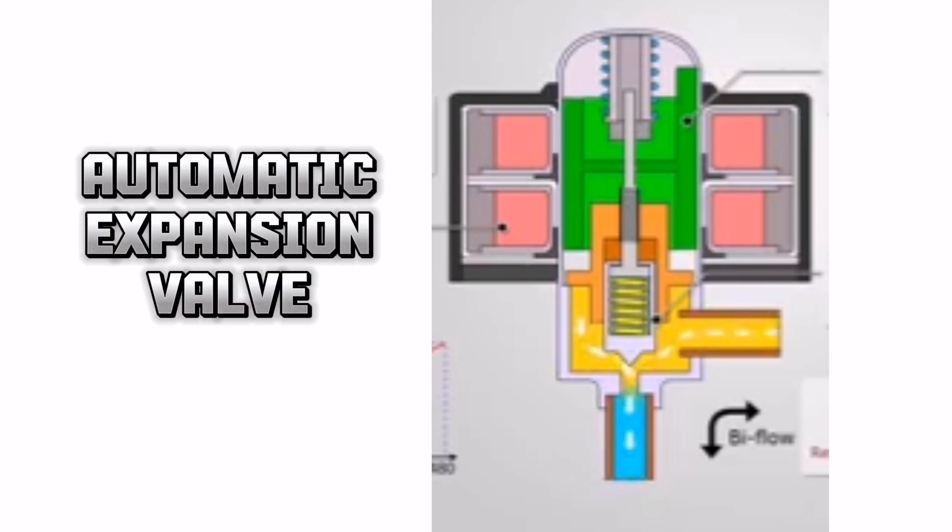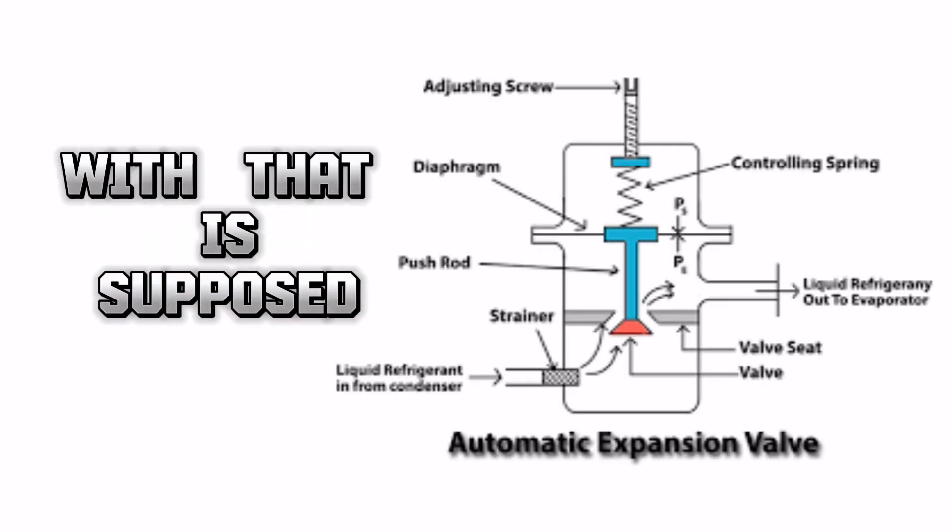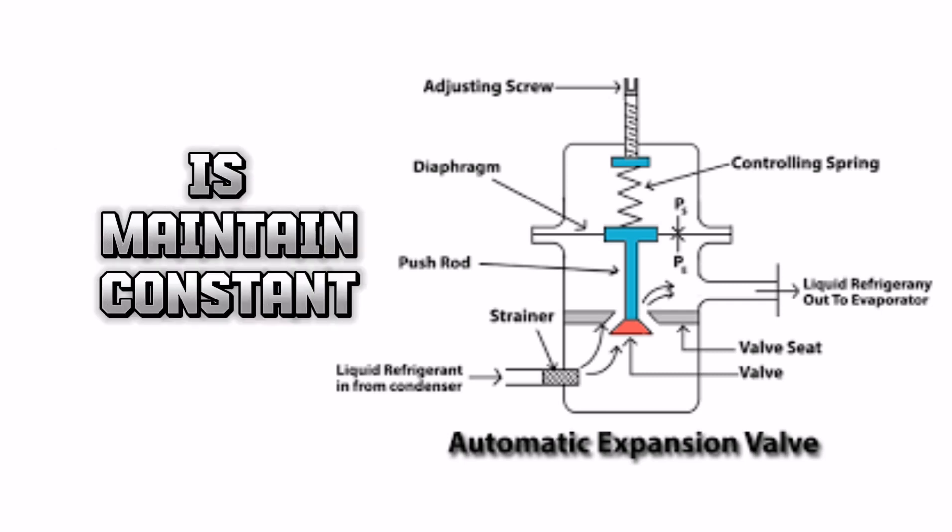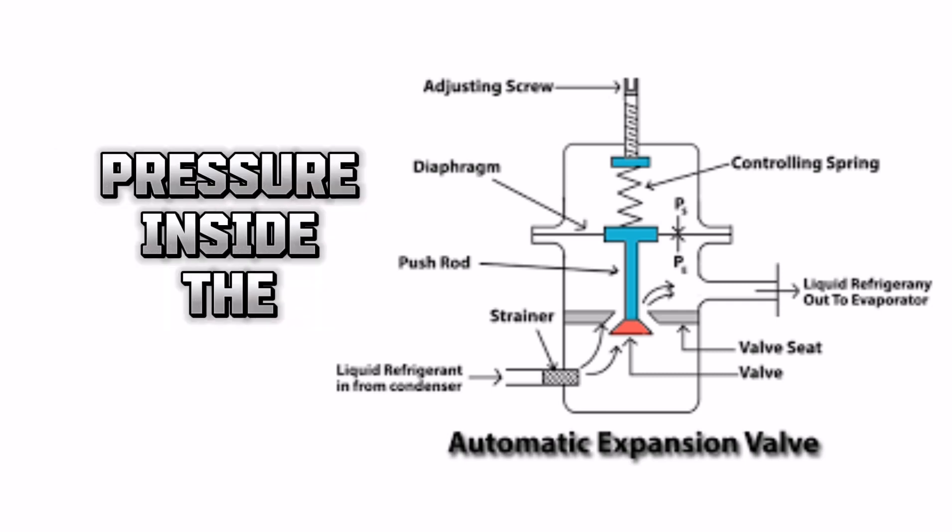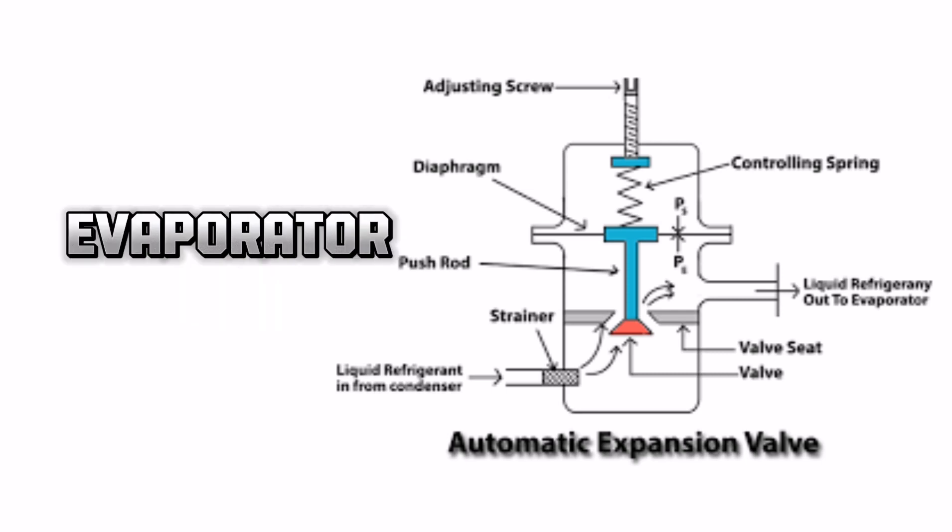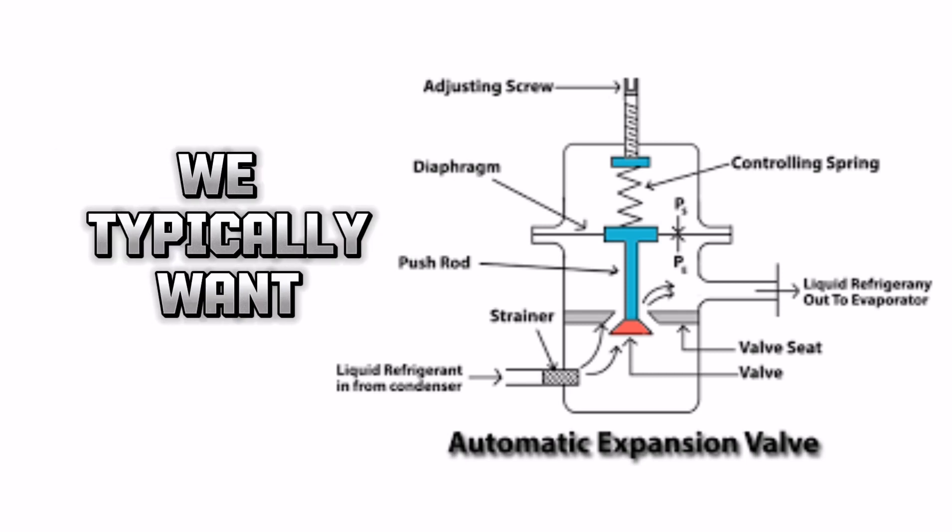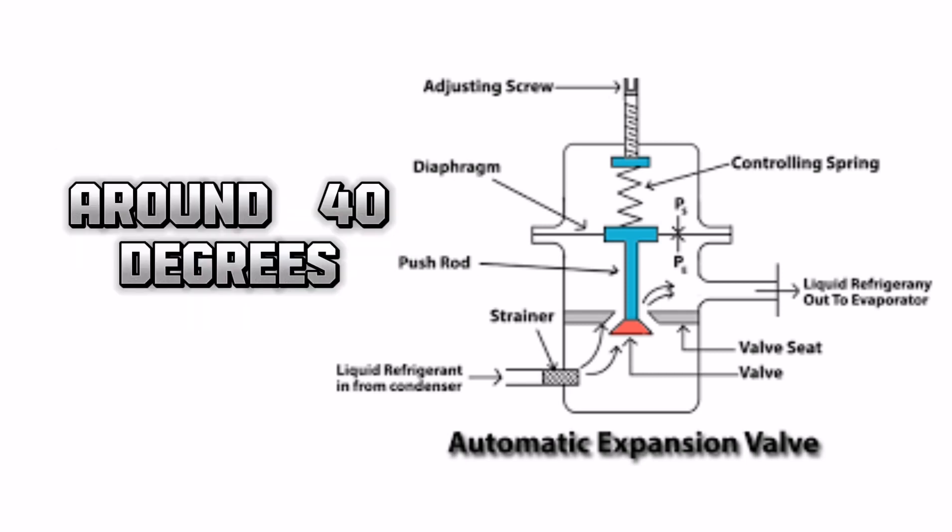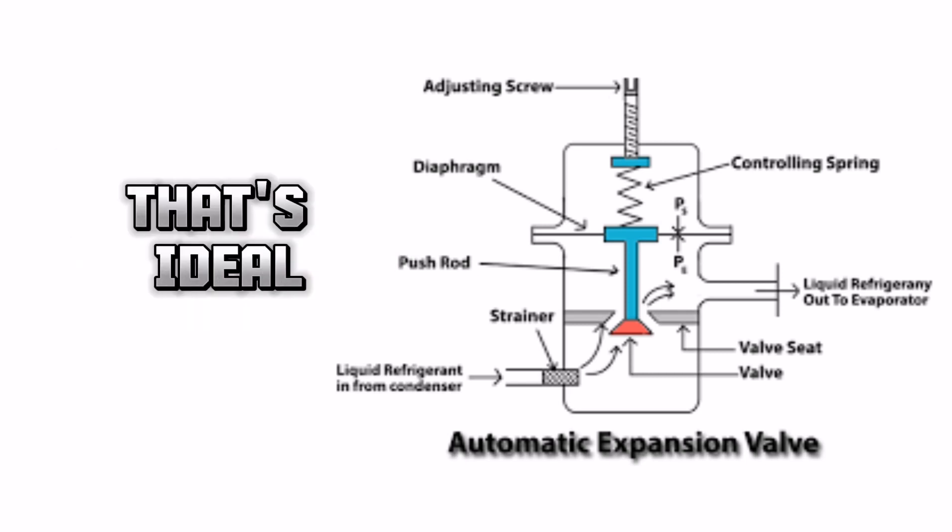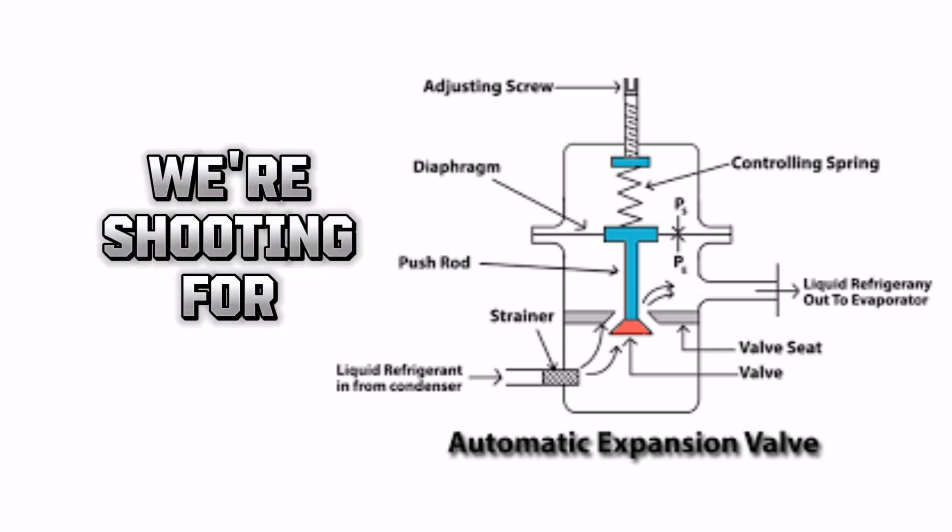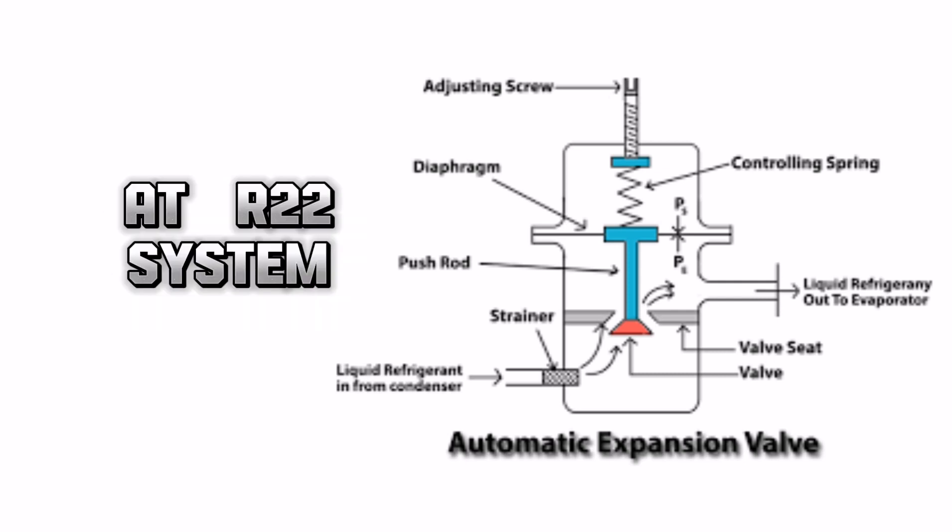Now the other one is the automatic expansion valve. What that is supposed to do is maintain constant pressure inside the evaporator. Pressure. If we think about it, in an air conditioning system, we typically want the evaporator to be right around 40 degrees. That's ideal. That's usually what we're shooting for.